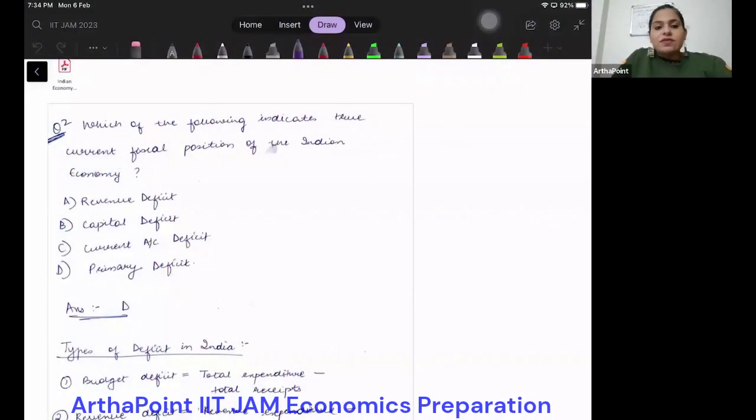Hi, good evening everyone. Today we will go ahead and discuss the Indian economics part of this IIT entrance exam. The first question that we have can be considered as part of Indian economics and also as part of macroeconomics. The question asks which of the following indicates the fiscal position of the Indian economy, and you're given revenue deficit, capital deficit, current account deficit, and primary deficit.